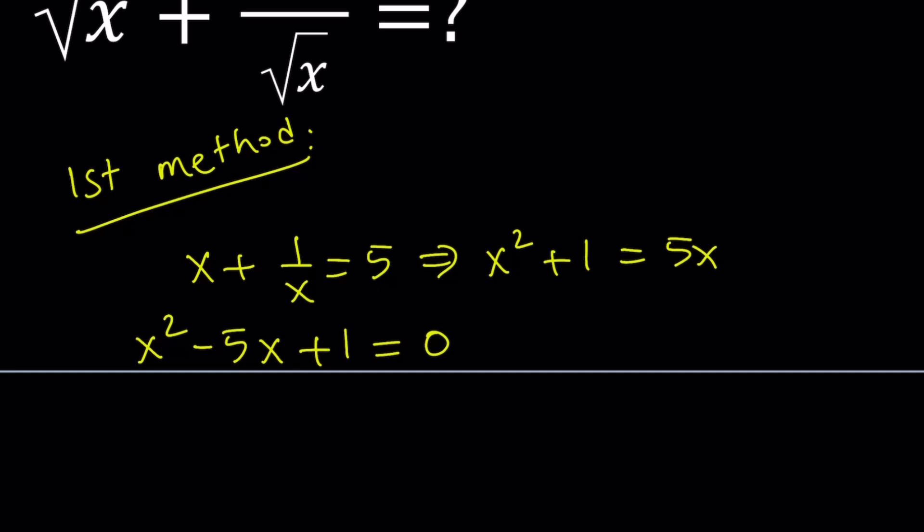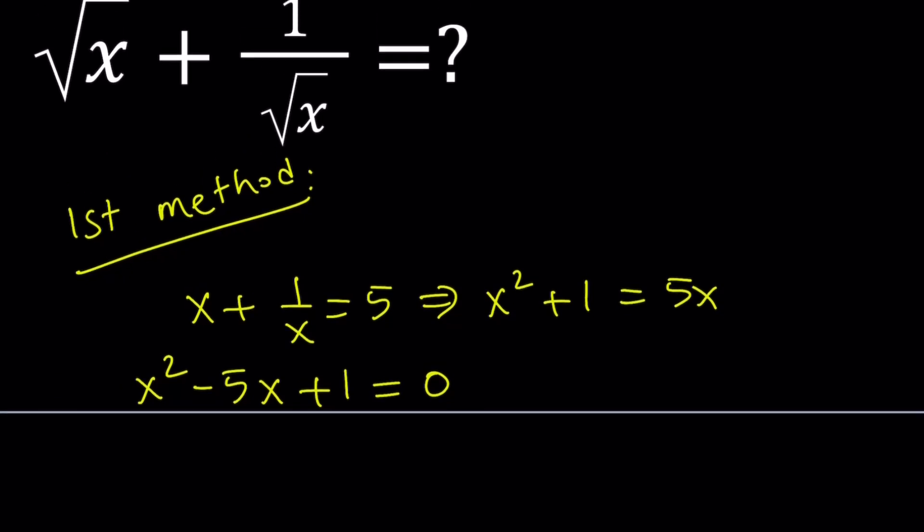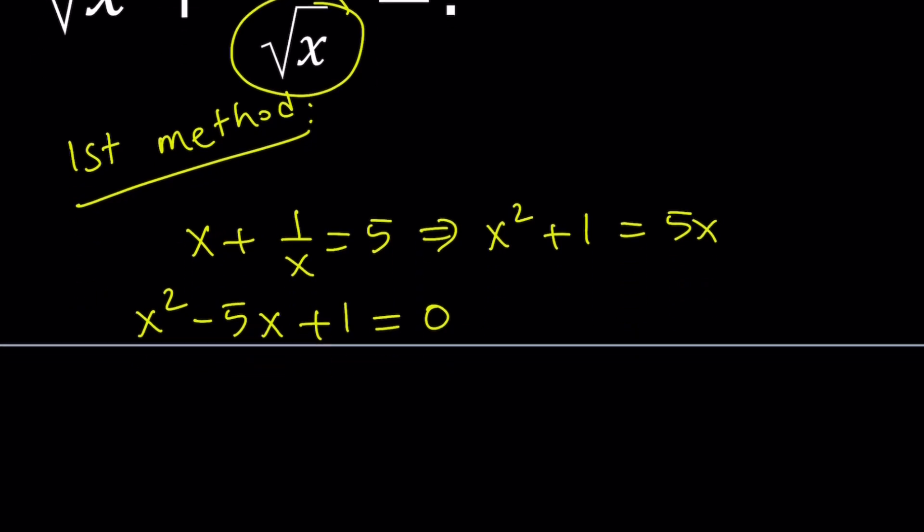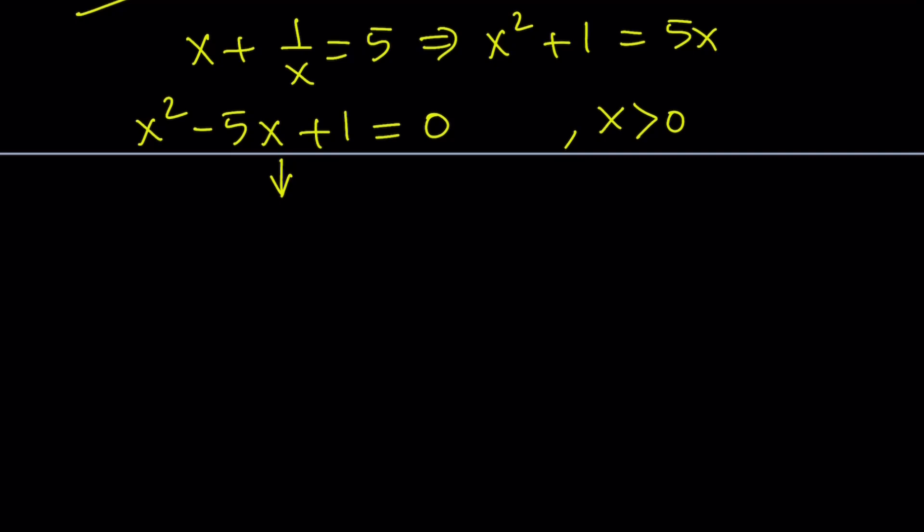So this is a quadratic equation, and we can solve it using the quadratic formula. One thing to keep in mind is that x must be positive because we're trying to evaluate square root of x plus 1 over square root of x, and we're looking at real values. If you look at this equation, you're going to notice that both of the roots are positive. If you solve this equation using the quadratic formula, negative b plus minus the square root of b squared, 25 minus 4, which is 21, divided by 2.